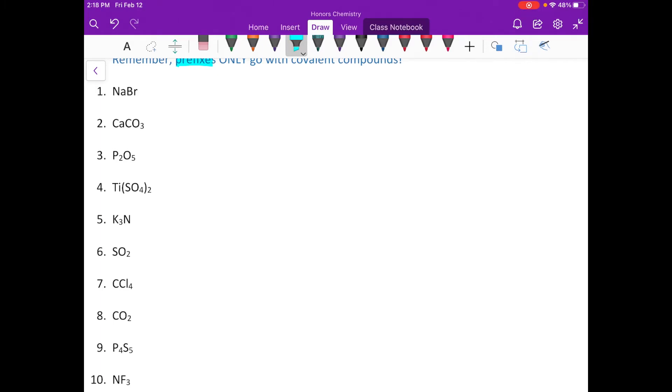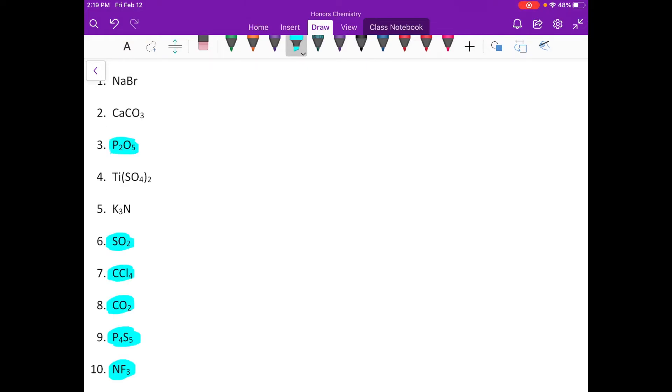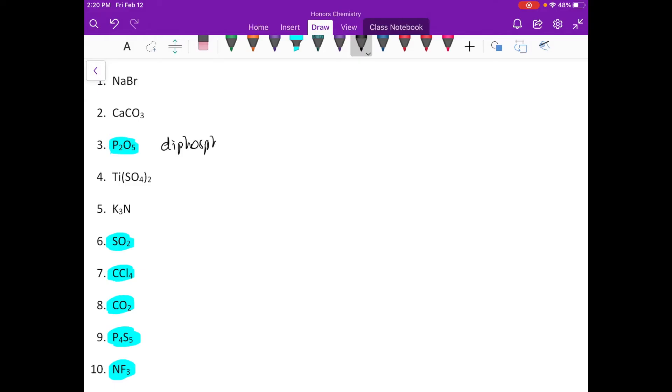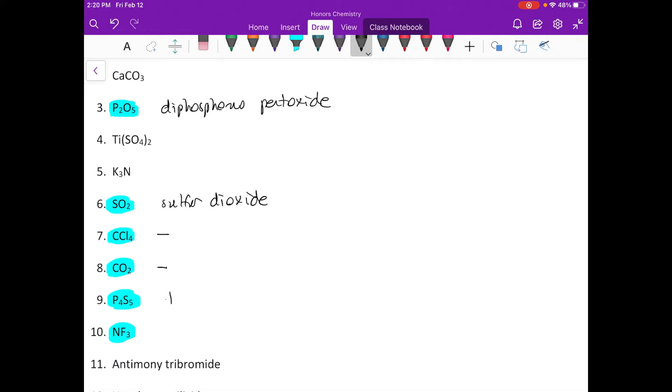Instead of putting a C by my covalent compounds, I went ahead and highlighted them in blue. How do you know they're covalent? You're looking for anything that's two or more nonmetals, or you're just looking for something that doesn't have a metal in it. None of these have metals in them, so we're going to go through and name them very quickly. This is going to be diphosphorus pentoxide. This is going to be sulfur dioxide. We've already written this one twice, carbon tetrachloride. We've written this one twice, carbon dioxide. This one's done. This one's going to be tetraphosphorus pentasulfide, and this one's going to be nitrogen trifluoride.